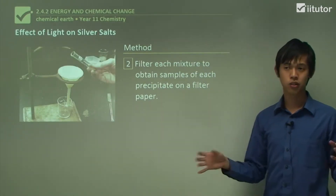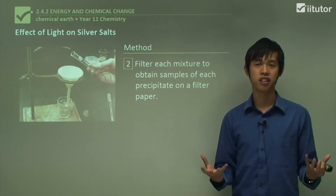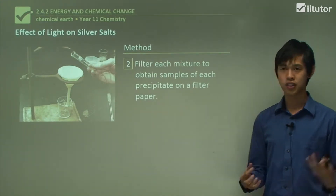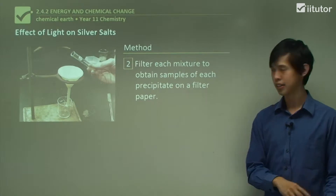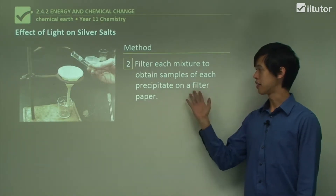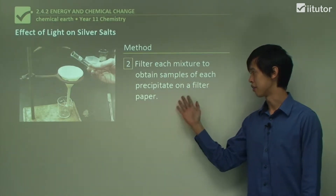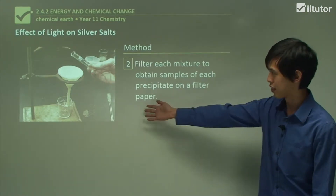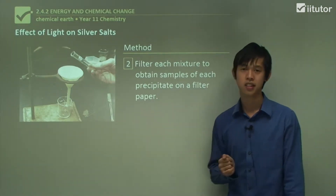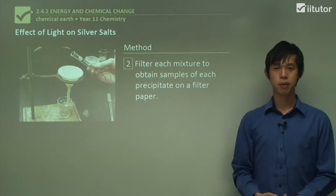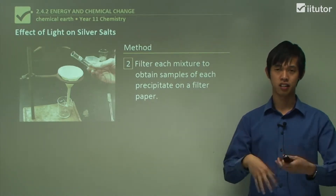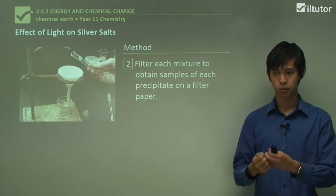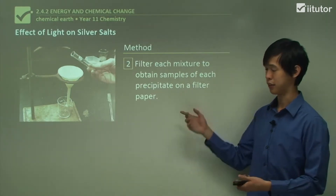Then we take those two solutions we've made — they now have all this precipitate through them. If we want to get the precipitate out, we can filter it. We filter each mixture to obtain samples of each precipitate on filter paper. Just pour it through the filter paper and the silver chloride or silver bromide will be stuck in the filter.